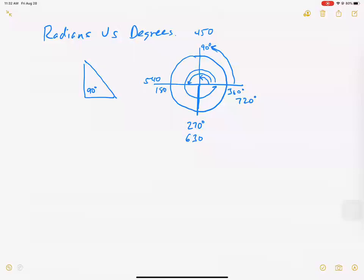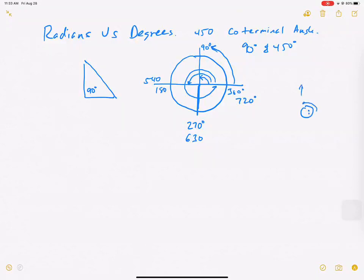The circle never ends — we can keep going infinitely. We have a special term for this: co-terminal angles. So 90 degrees and 450 degrees are co-terminal angles, meaning they give you the same amount of turn, just on a different lap of the circle. If I turn 90 degrees, my eyes face this way. If I turn 450 degrees, I'm still facing the same direction.